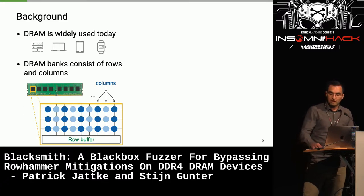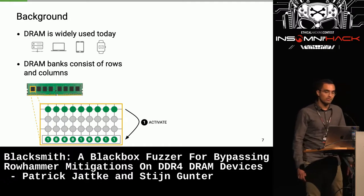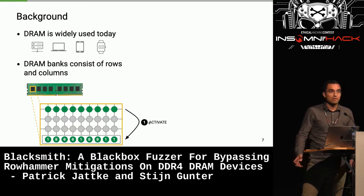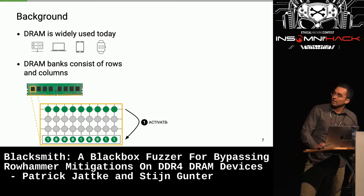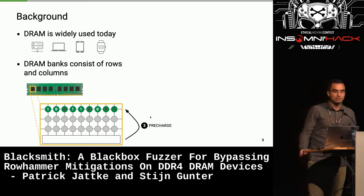To understand how rowhammer works, let me explain how a write operation works on a DRAM device. Reading and writing always happens row-wise. For example, to read the green row at the top, you first send a DRAM activate command, which loads that row into the row buffer — this happens transparently via the memory controller, which translates program memory accesses into DRAM commands. After activation you can perform a write and modify values. Then before accessing another row, you issue a pre-charge command that writes back the modified data.